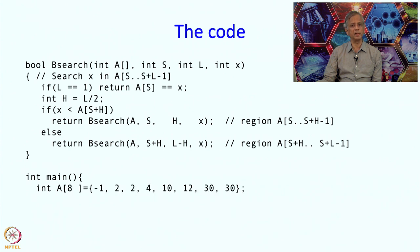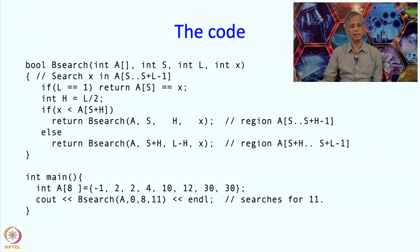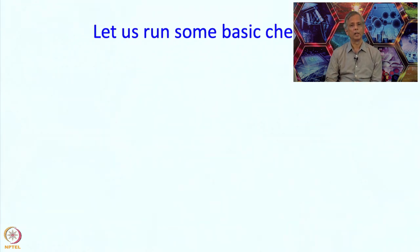What is the main program? Say we have a sorted array as input, and we want to search for 11. The call is bsearch(A, 0, 8, 11) — starting at index 0, length 8 meaning the entire array, and x is 11. This will print 1 or 0 depending on whether 11 is present or not. In this case 11 is not present so it should print 0.